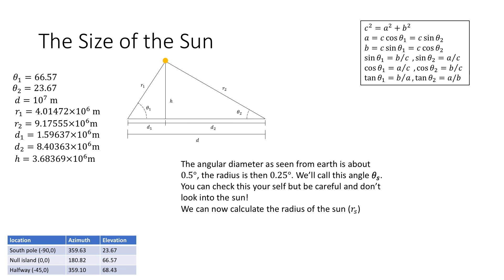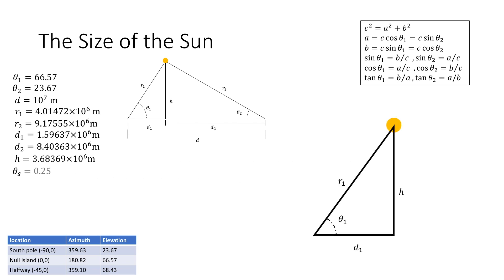What I want to do is actually calculate the size of the sun. So the angular diameter of the sun as seen from earth is about 0.5 degrees. The radius is then 0.25 degrees. Now we'll call this angle theta s. Now you can check this yourself but be careful and don't look into the sun. We can now calculate the radius of the sun, rs, using trigonometry.